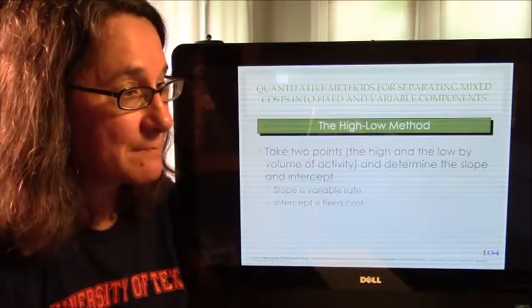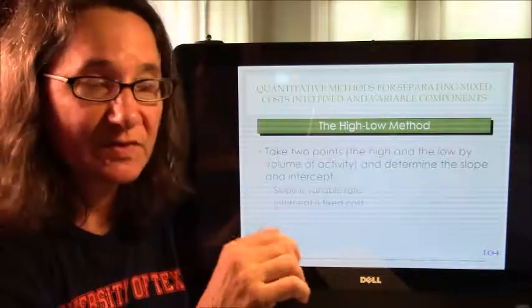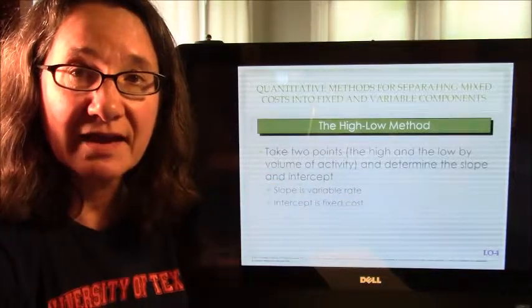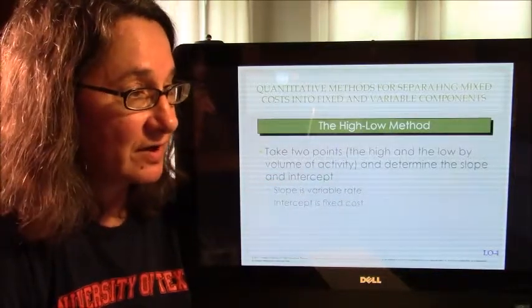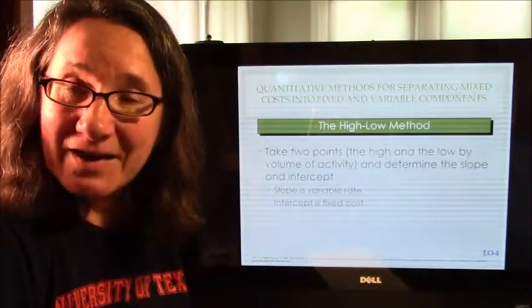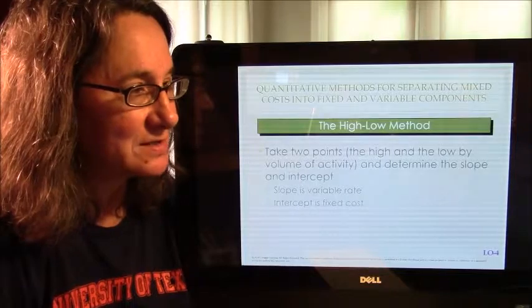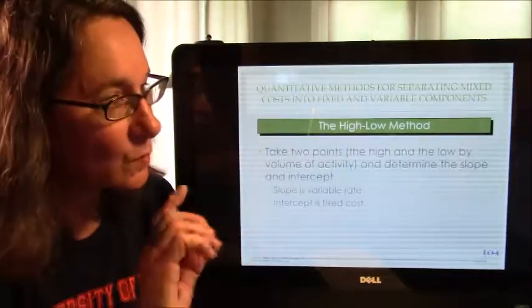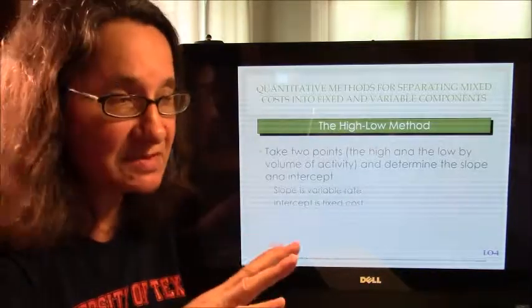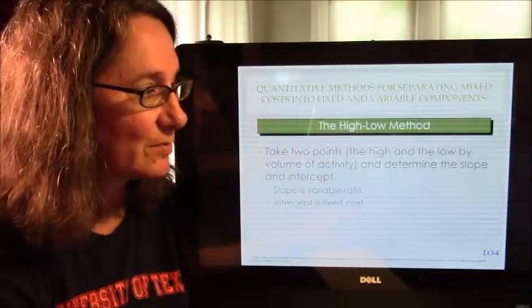I don't even have to go that far. I don't even have to plot them, I don't have to do a regression. I could just do the high-low method. But basically, you're going to take the two points, the high and the low, so the cost, the high point of the cost and the low point of the cost, the high point of the activity and the low point of the activity, and you can figure out, that would give you two points. So you could draw a line. That's all you need, two points to draw a line. So you use those two points and you draw a line. The slope's the variable rate, the intercept is the fixed cost.